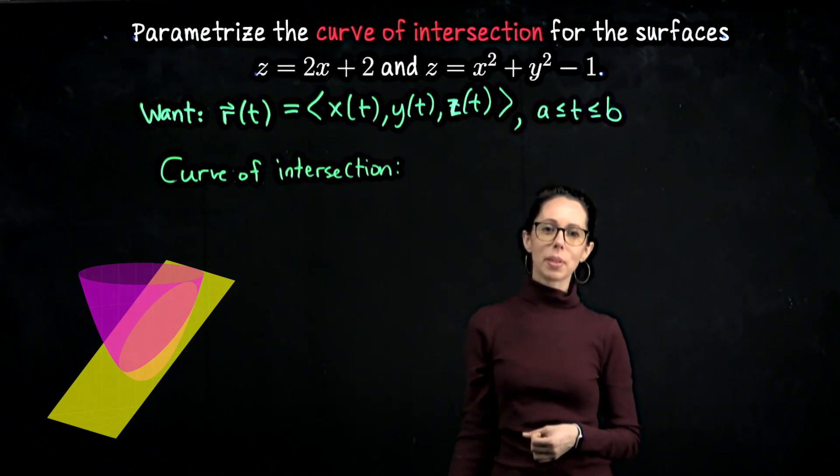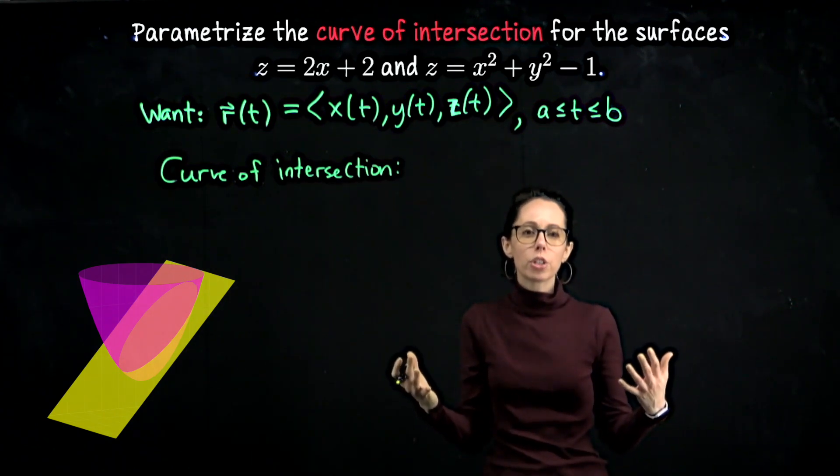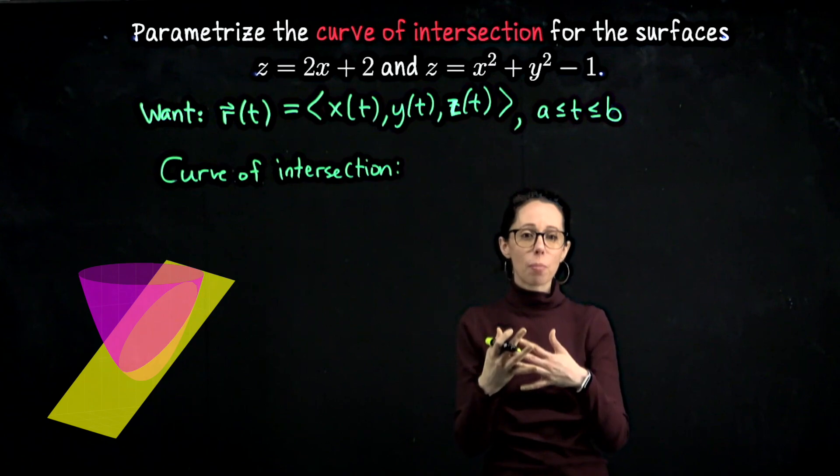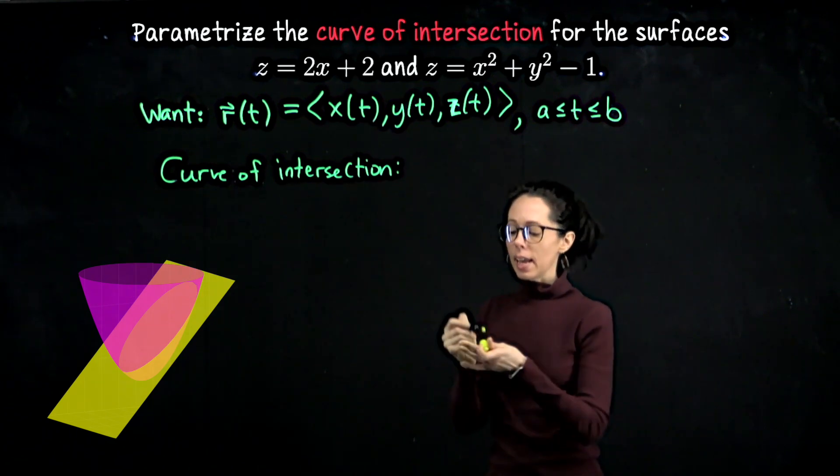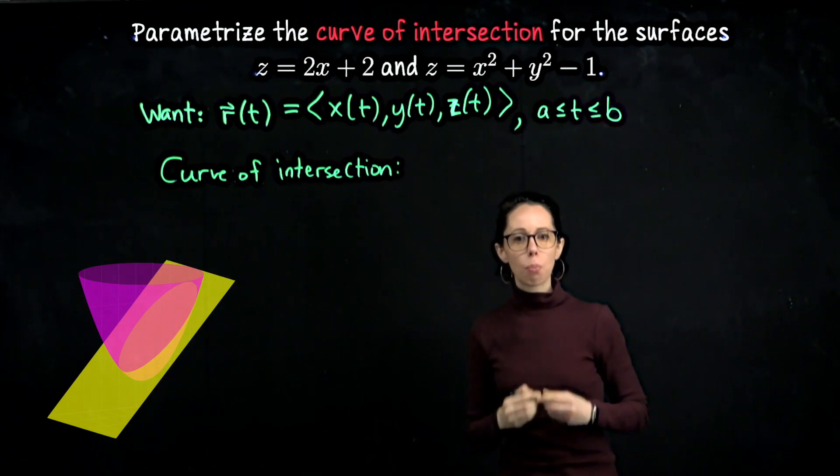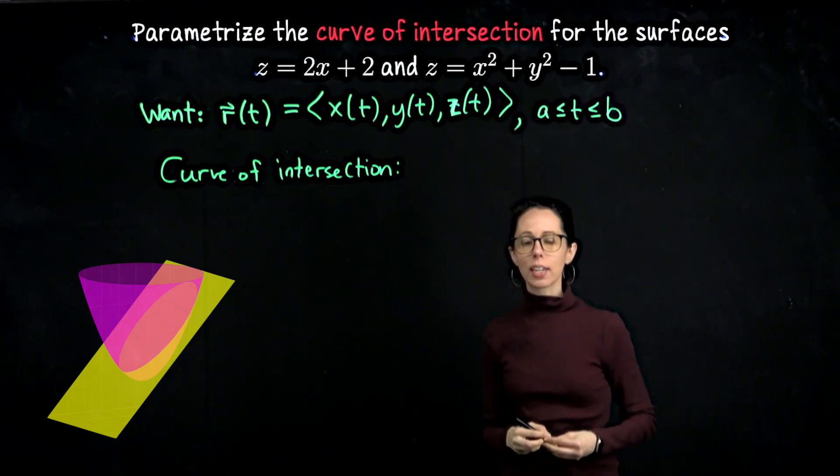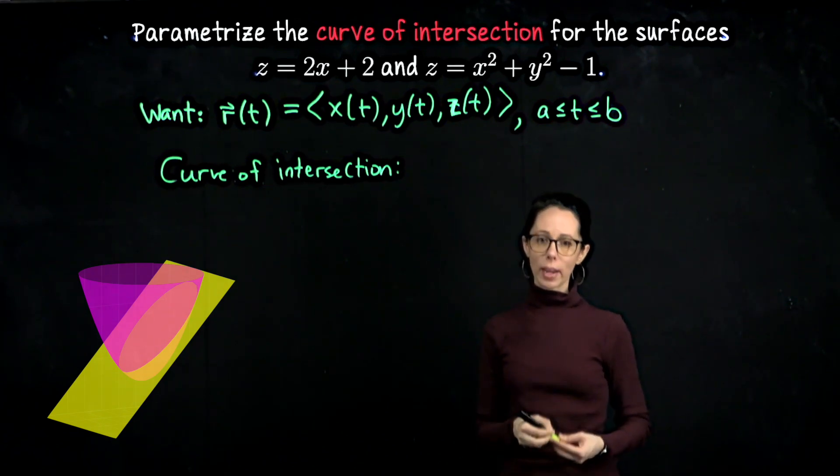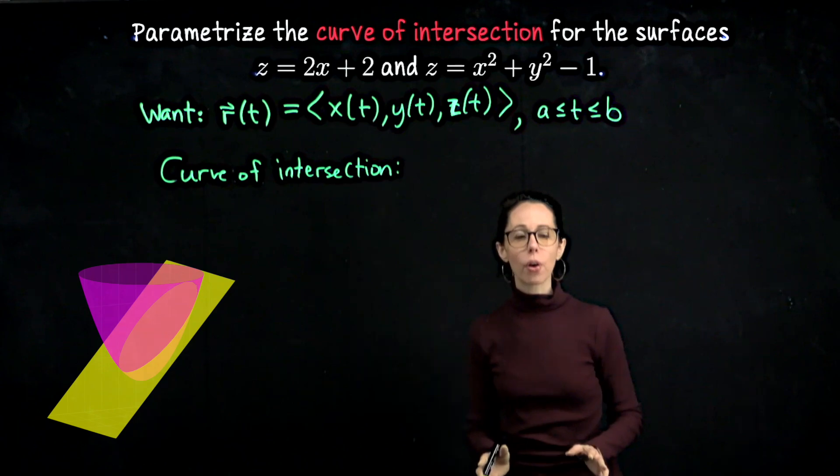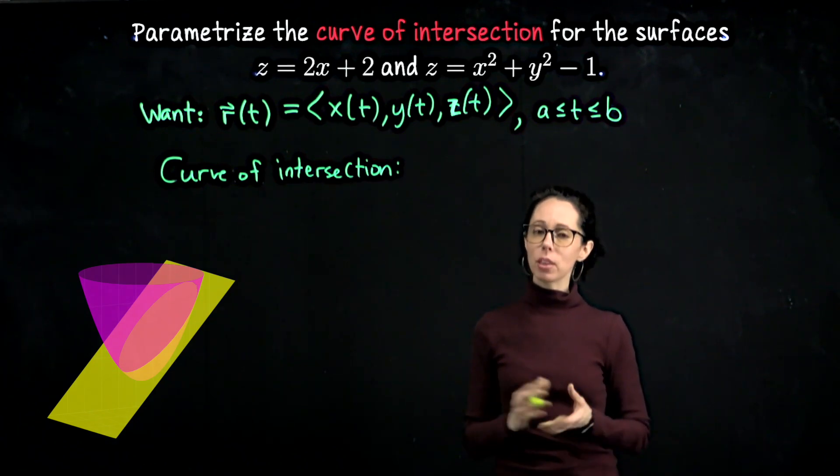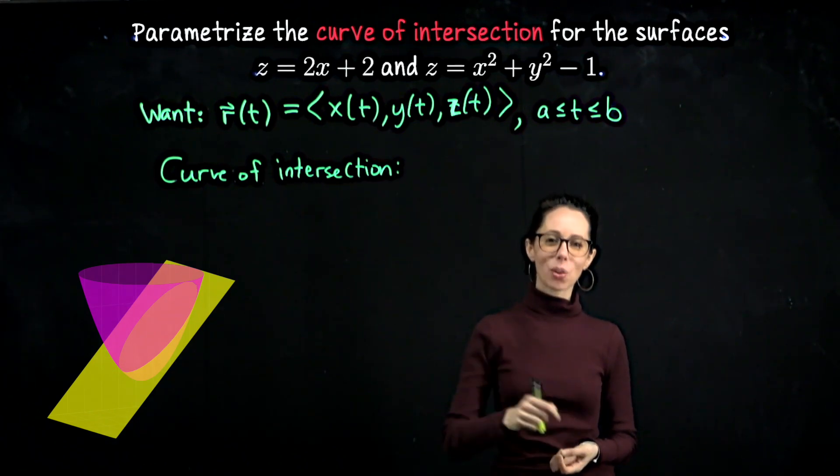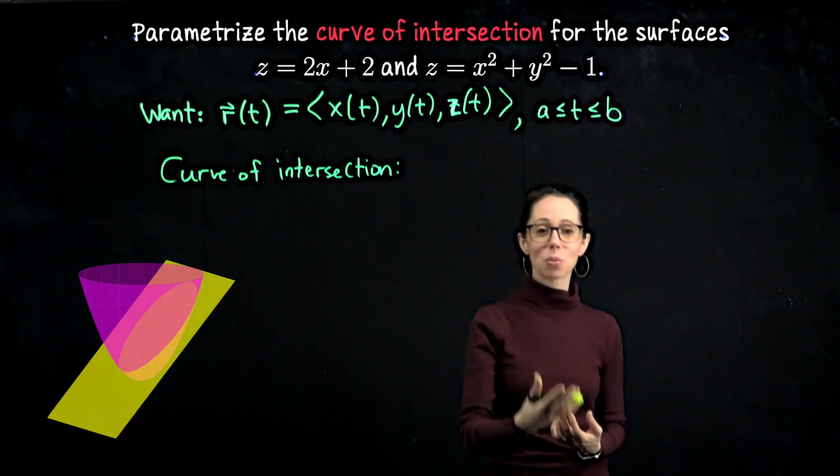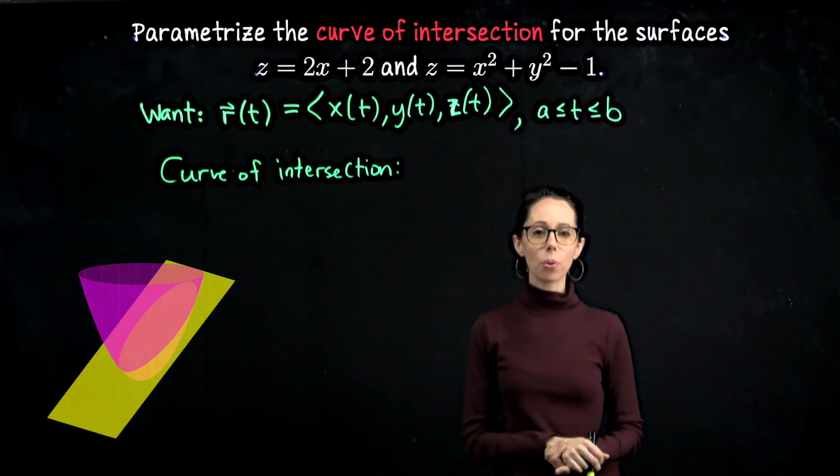Whenever you're looking to describe an intersection in mathematics, what you usually want to do is find some way to bring the information together. It's the case that for any point on this curve of intersection, its z coordinate is twice its x coordinate plus 2, but also for the same point, it must be the case that the z coordinate is the x coordinate squared plus the y coordinate squared minus 1, because it satisfies both equations.